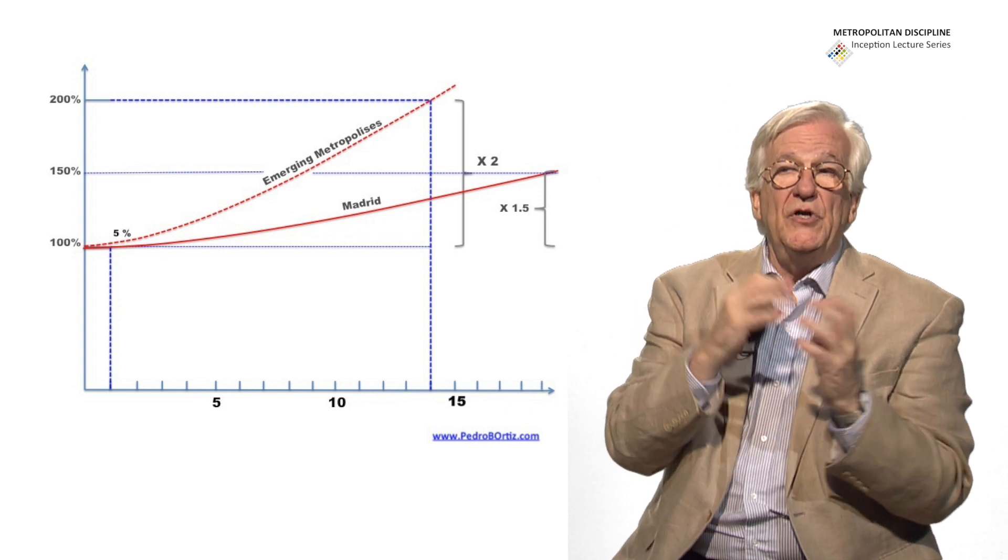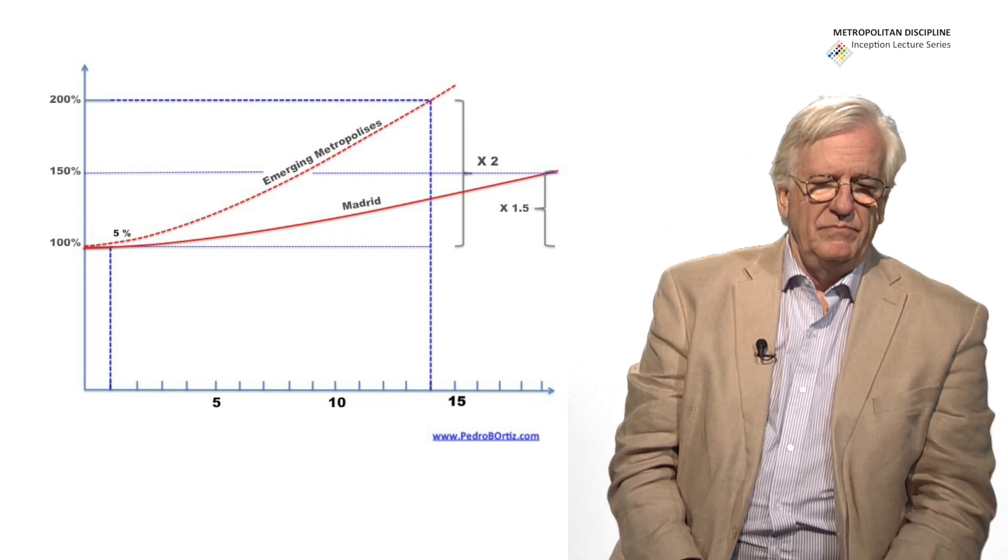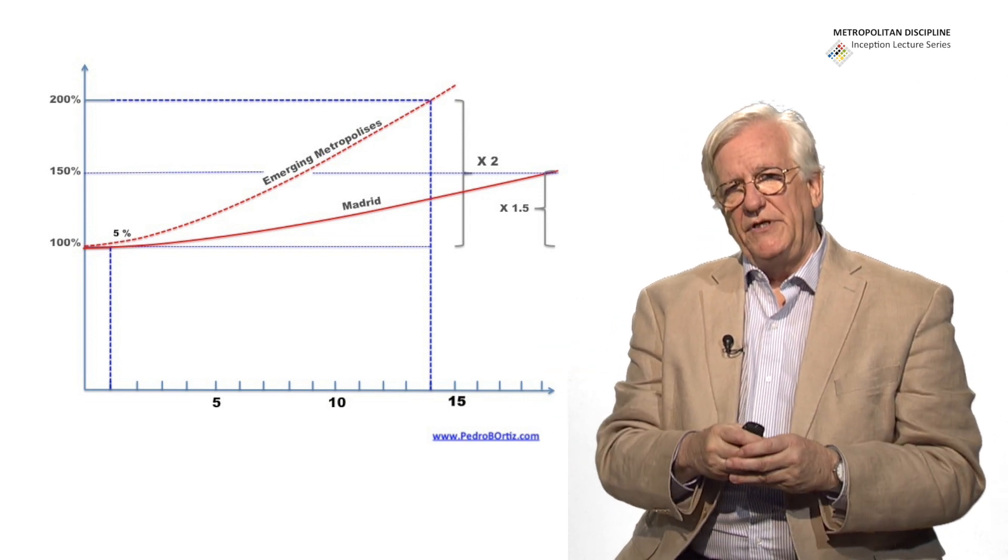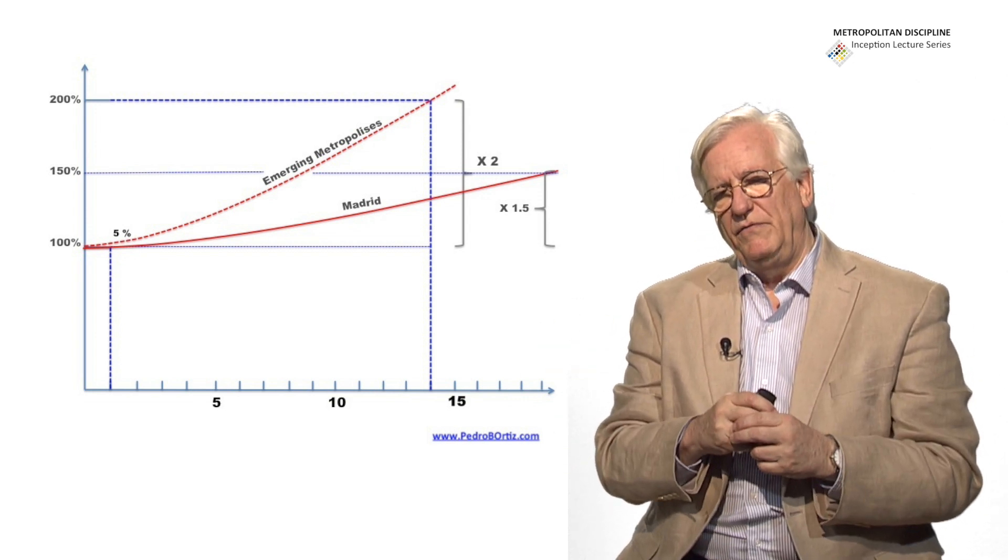You see there the emerging metropolis, which are growing at 5%, many of them per year. That means that they are doubling every 14 years, and we saw that in one of the previous presentations.